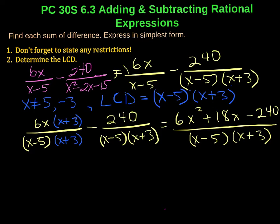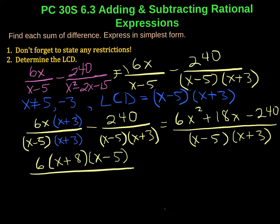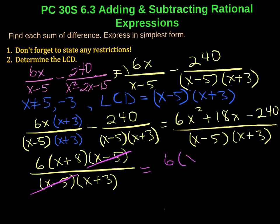Now let's multiply 6x through the bracket x plus 3. That gives us 6x squared plus 18x minus 240, all divided by x minus 5 times x plus 3. We check whether it can be simplified — and yes, the numerator can be factored as 6 times x plus 8 times x minus 5, all divided by x minus 5 times x plus 3. We notice the x minus 5 factors cancel, and our final answer is 6 times x plus 8 over x plus 3, where x can never equal negative 3 and 5.